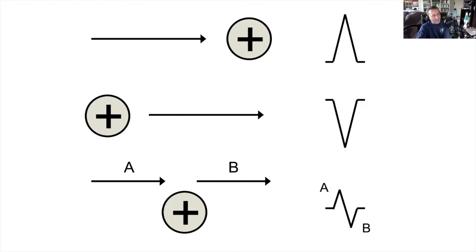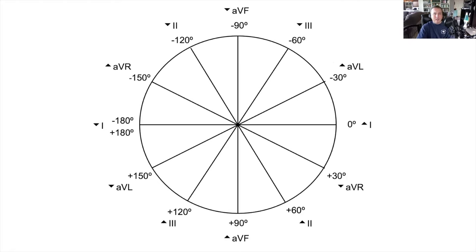This is the key to identifying the axis in the frontal plane. This shape is known as the hexaxial reference system, which we're going to use to help calculate the QRS axis in the frontal plane.